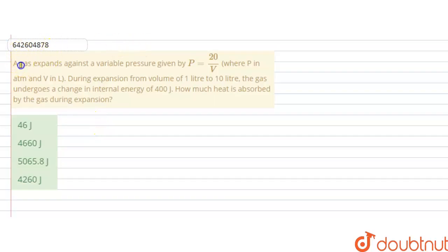Hello students, a question is: a gas expands against a variable pressure given by P is equal to 20 by V, where P in atmosphere and V is in litres. During expansion from volume 1 litre to 10 litre, the gas undergoes a change in internal energy of 400 joules. How much heat is absorbed by the gas during expansion?